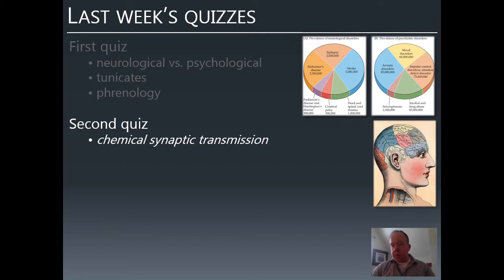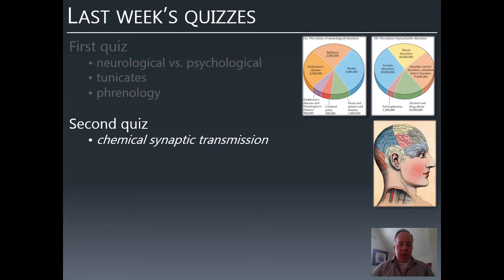With electrical transmission, whatever electrical charge gets to the axon terminal is just what goes into the next neuron. Chemical synaptic transmission lets you modify the signal—you can boost it. Electrical transmission, after going through a few neurons, is so attenuated that it dies. With chemical transmission, every time a new neuron picks up the chemical signal, it gets made again.